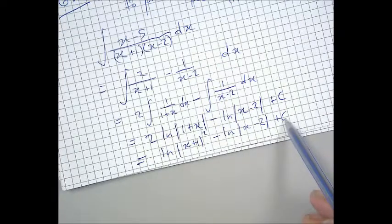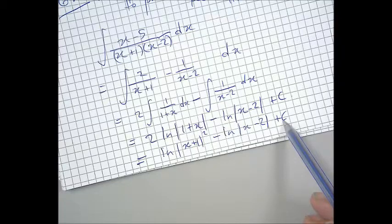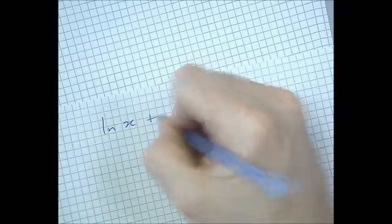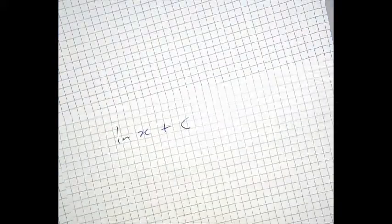Sometimes you even see this disappear. And the way it disappears, I'll give you an example, is this. So, let's say you've done that, right? And you go, I can't understand why they don't have a plus C.